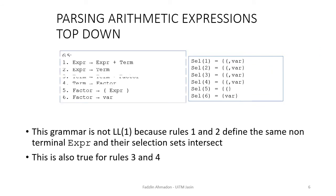Moving on to step 12: the selection set for rule 1 is {left parenthesis, var}, rule 2 is {left parenthesis, var}, rule 3 and rule 4 are also {left parenthesis, var}, rule 5 is {left parenthesis}, and rule 6 is {var}. Rule 1 and rule 2 are both derived from the same non-terminal expression and their selection sets overlap. Similarly, rule 3 and rule 4 are derived from the same non-terminal term and their selection sets also overlap. Therefore, grammar 5 is not an LL1 grammar.